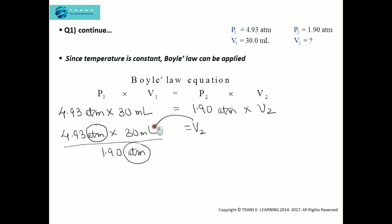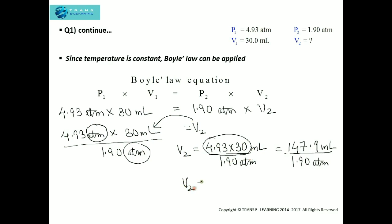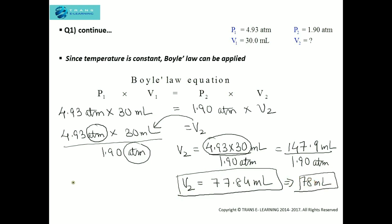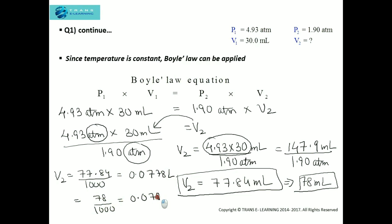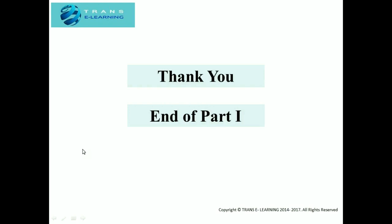So Volume 2 equals 4.93 times 30 milliliters divided by 1.90, giving a final value of 77.84 milliliters. Rounded off, this is approximately 78 milliliters. To convert to liters, divide by 1,000: 77.84 ÷ 1,000 = 0.0778 liters. Part 1 ends here; for other questions, watch the second part of this video.